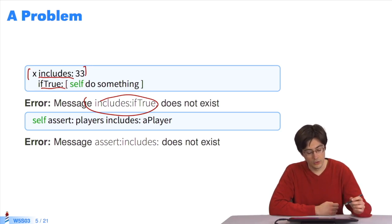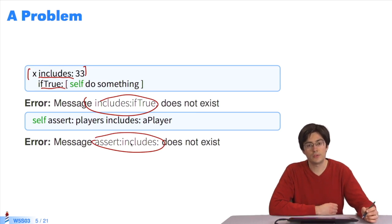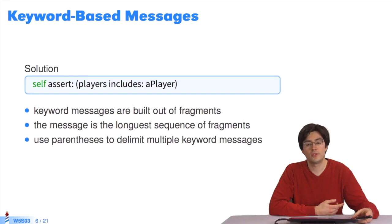So what's missing here is a pair of parentheses to say that the message if true is sent as a result of X includes 33. In the same way, assert includes does not exist. What we wanted to do was assert on the result of includes, so the parentheses are missing here. Don't hesitate to put parentheses when you have multiple keyword messages in the same expression, to delimit them, because Pharo will try to group keywords together and consider it to be one message.